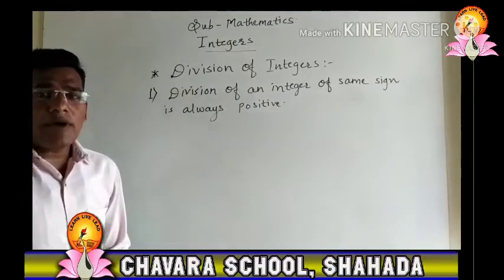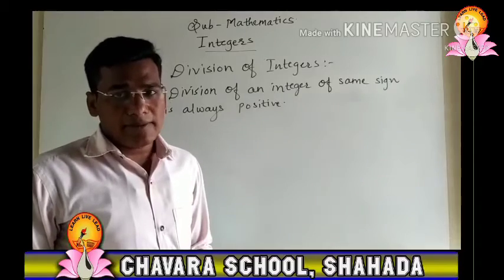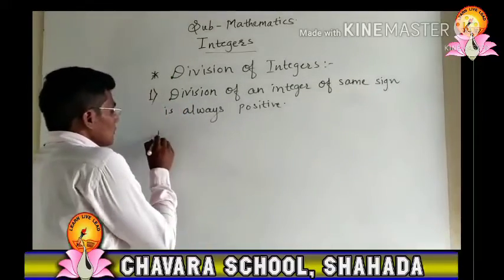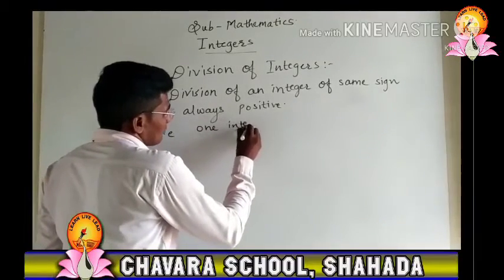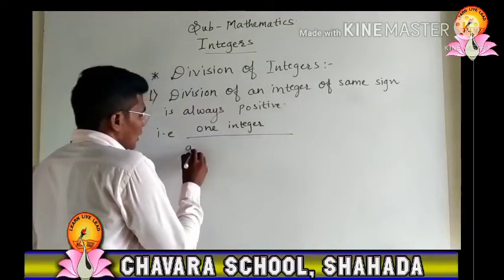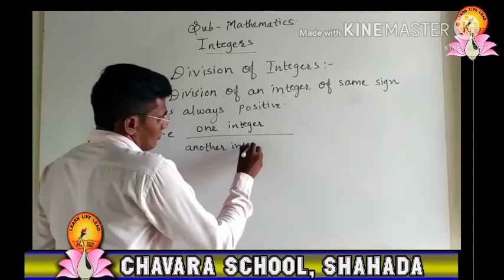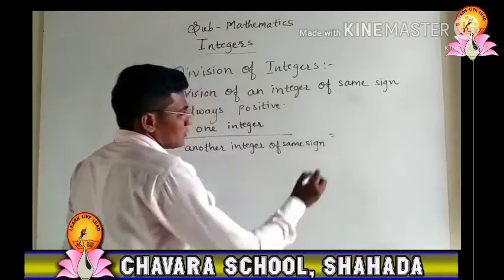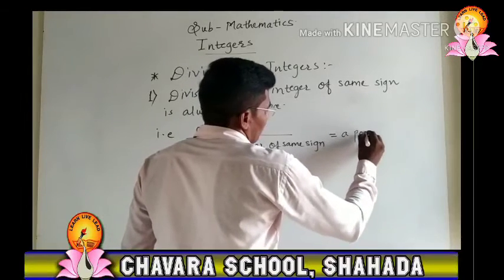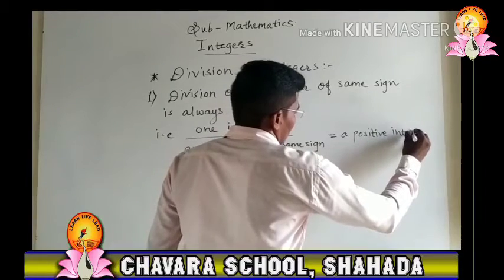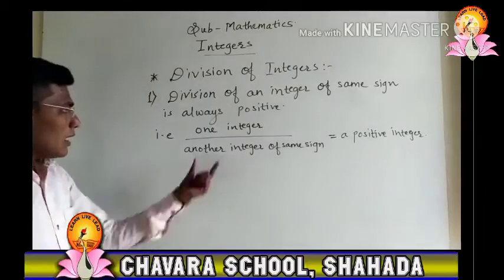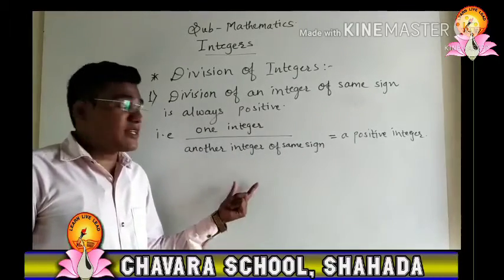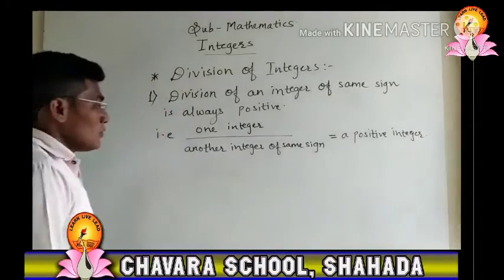Means, if we have integers and those integers have the same sign, then the result of the division will always be positive. Theoretically, one integer upon another integer of the same sign equals a positive integer. Here there are two types.